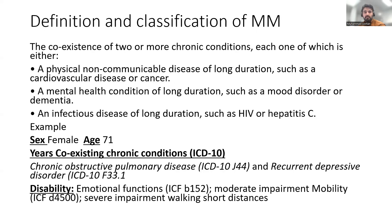Looking more closely at the definition and classification of multimorbidity: conditions are normally mapped against ICD-10 codes. It is defined as the co-existence of two or more chronic conditions — physical non-communicable diseases of long duration such as cardiovascular disease or cancer, mental health conditions such as mood disorder or dementia, or infections such as HIV or hepatitis.